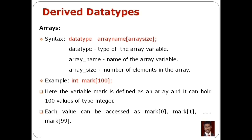Each value can be accessed using the index number. If we store 100 values, the index number starts at 0 — that's the first value. mark[1] is the second value. If the size is 100, the index numbers range from 0 to 99.